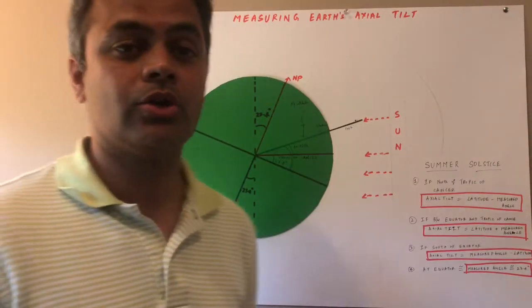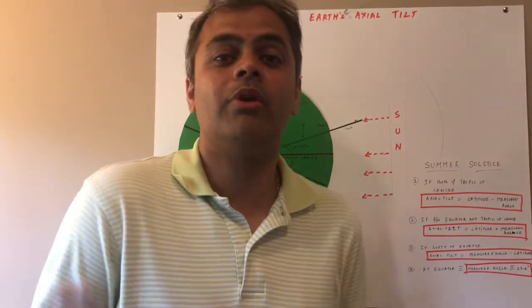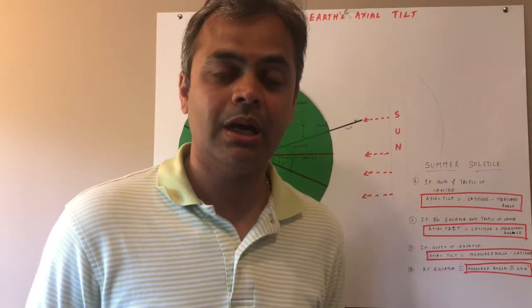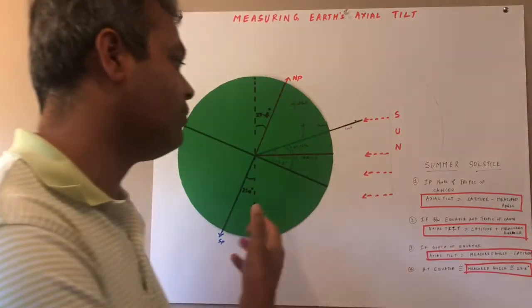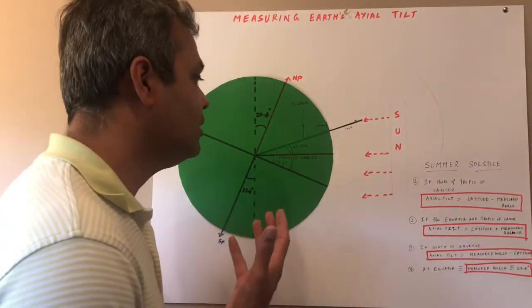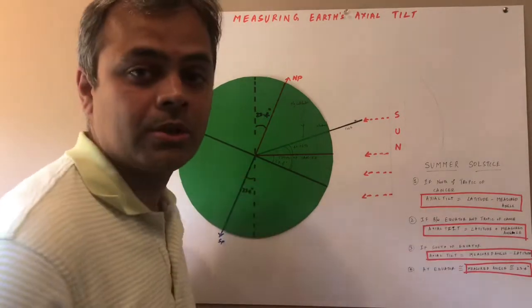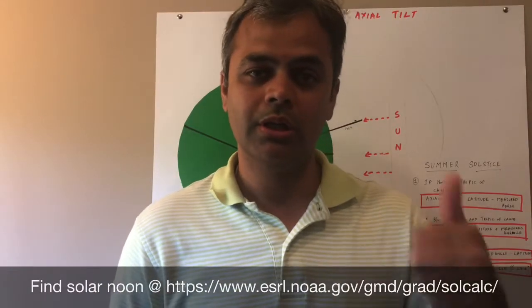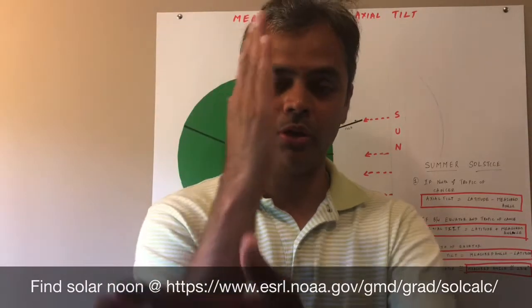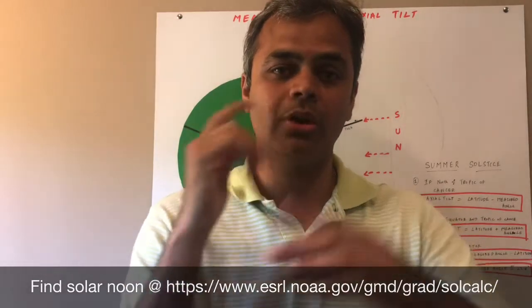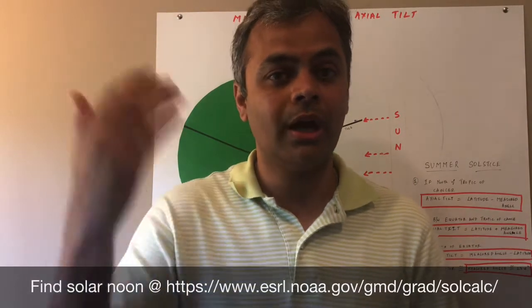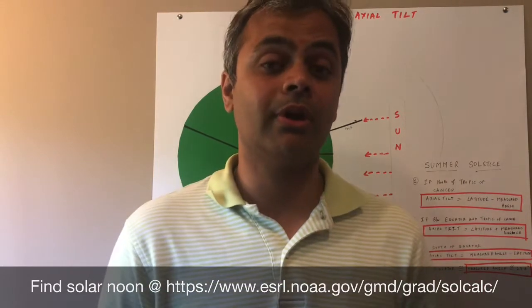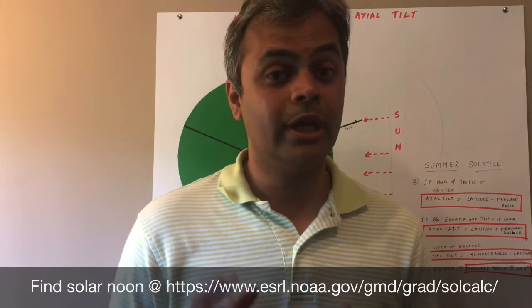I'll divide this into two parts: how do we measure the axial tilt, and then a deeper dive into the math and logic behind it. It really comes down to a couple of very simple techniques. The idea is essentially to get a pole, stick it into the ground perpendicular to the Earth's surface, figure out your latitude, figure out your local solar noon, and measure the shadow and the length of the pole. With these simple measurements you can actually figure out the axial tilt of the Earth.